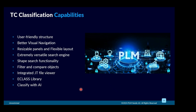Classification provides a user-friendly structure to navigate the classification system, which we will see in the demos and videos in the next slides. It provides better visual navigation, a layout, and a search engine — which is the most important feature — to find parts by attributes, narrow down by shape, and search by different methodologies. You can also filter the results.